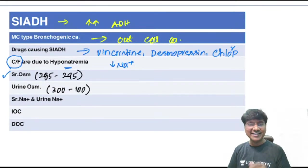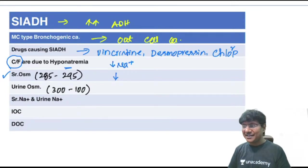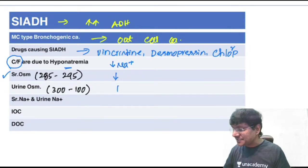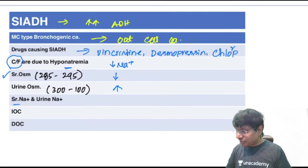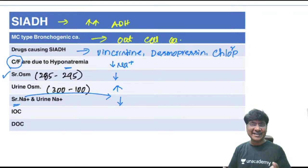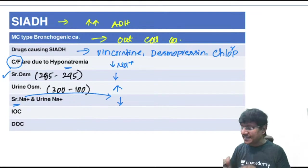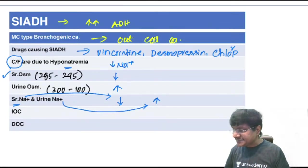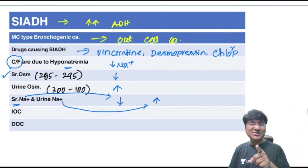Serum sodium is decreased in SIADH because RAS is inhibited and atrial natriuretic factor is released, causing sodium to be excreted. Therefore urine sodium is increased. Remember: serum sodium decreases, urine sodium increases in SIADH.